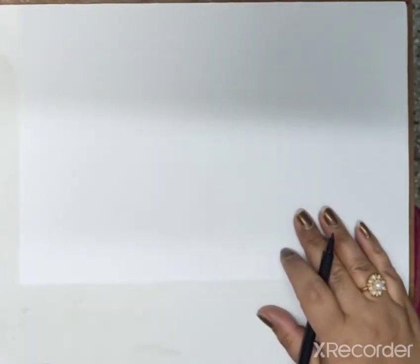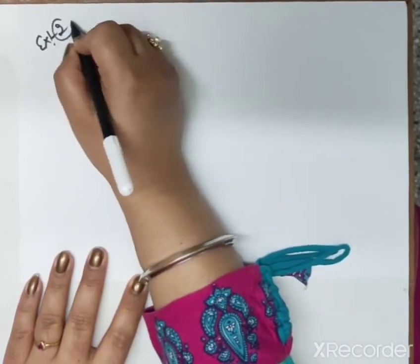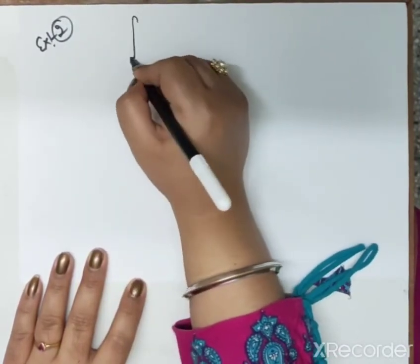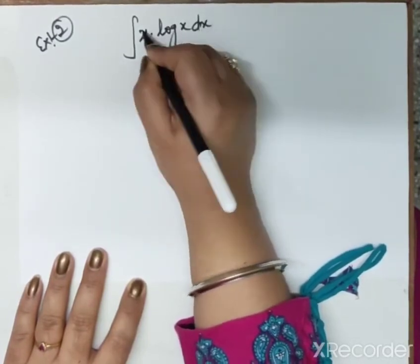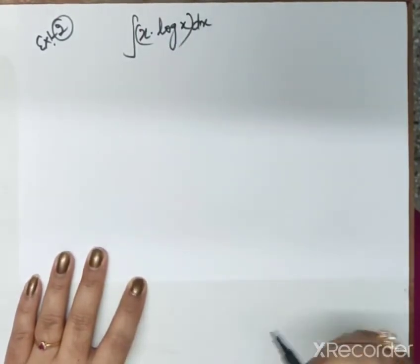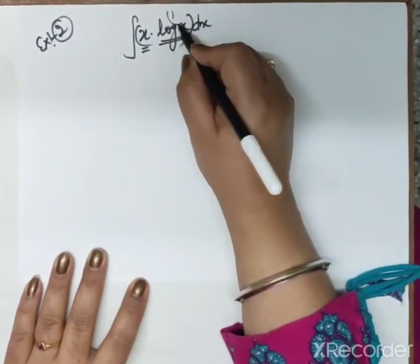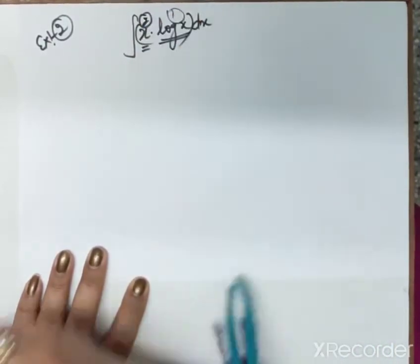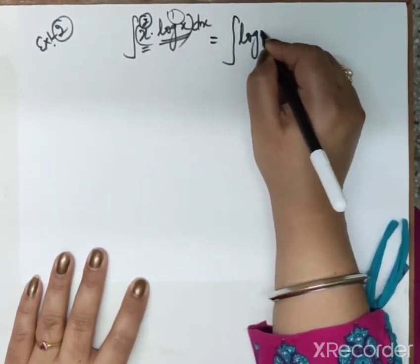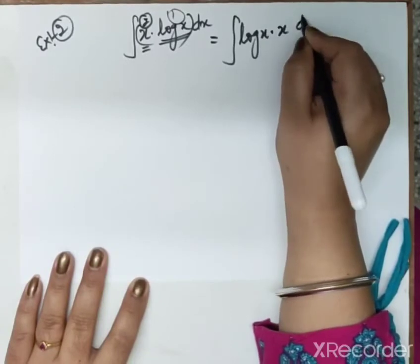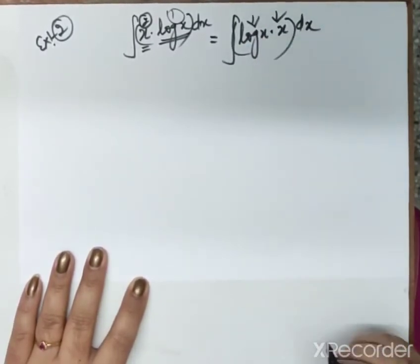Let us take another example. We used exponential; now let us take log. Example 2: integrate x · log(x) dx. Our rule says if there is a logarithmic function, take it as first. So we rewrite this as log(x) · x dx. Here u = log(x) and v = x.